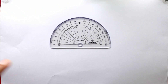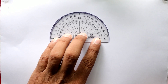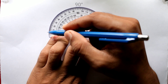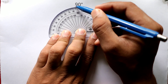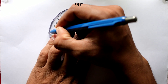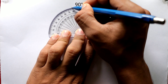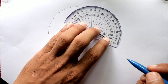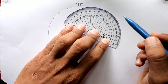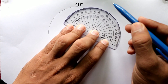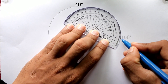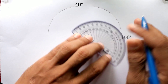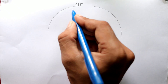First of all we will use a protractor and put it right here like this, and then we will mark a line arc. After marking it up to 90 degrees, we will put it at 40 degrees here, a little bit downside from here. Now we will make an arc like this, and then we will join these two points.